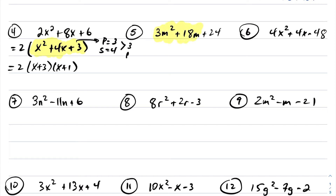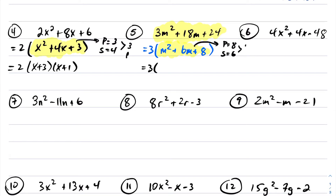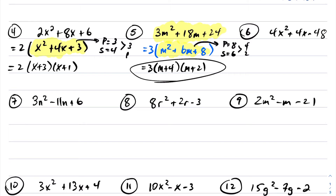Likewise for the next question — you always want to look for a GCF. The GCF here is 3. Factor out a 3 and I'm left with m squared plus 6m plus 8 — a simple trinomial inside. Two numbers whose product is 8 and whose sum is 6 are 4 and 2. So this factors into 3 times m plus 4 times m plus 2, and now we're fully factored.